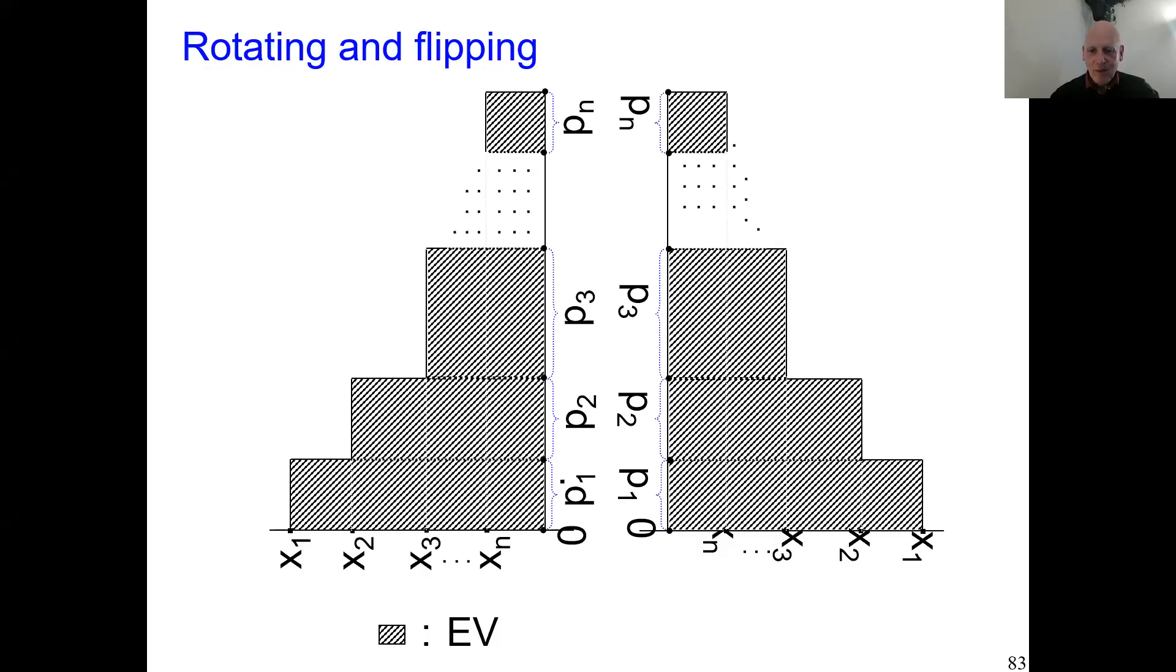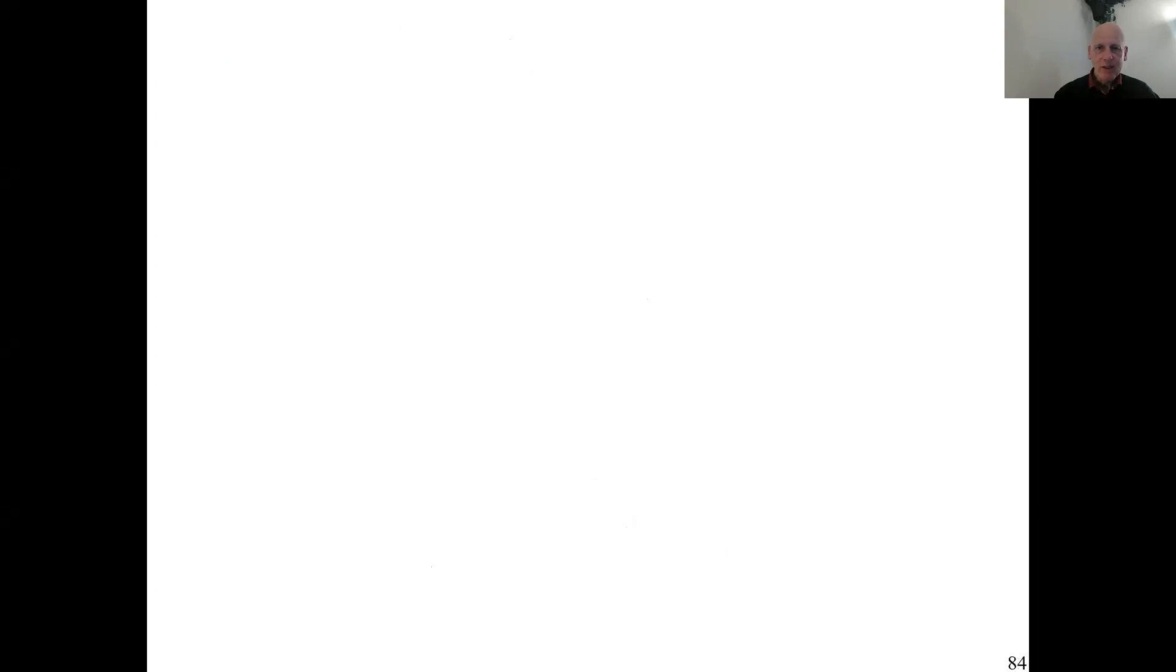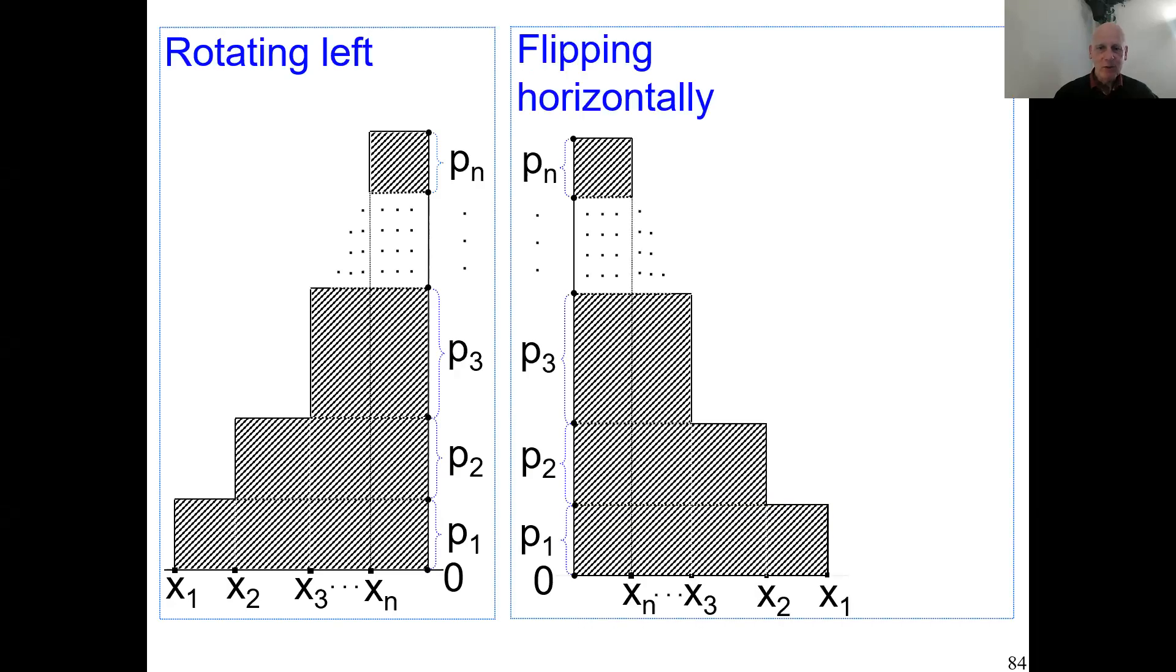Here are the figures that we had. This area is still the expected value of the lottery. Now this area can be taken as the integral of the function of which this is the graph. If you integrate the function, you get the area below.